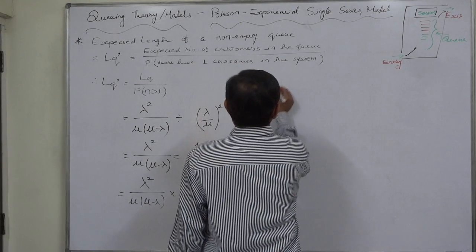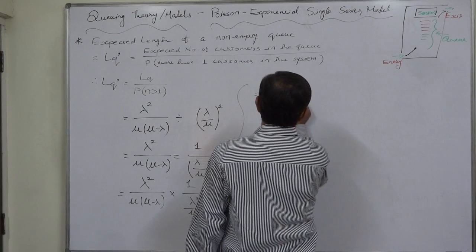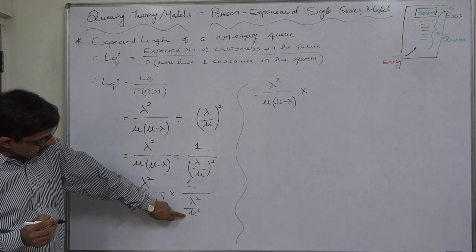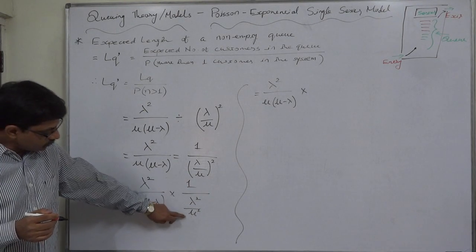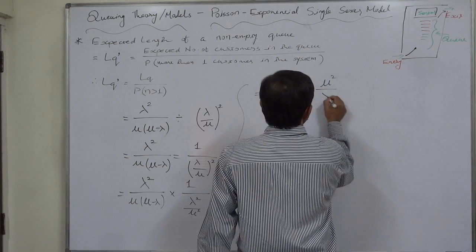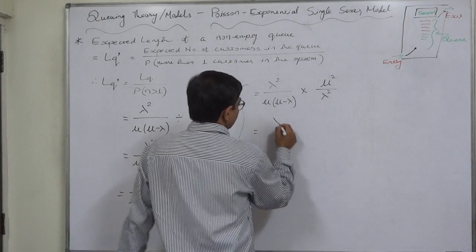That will be equivalent to lambda square upon mu into mu minus lambda. Now the denominator becomes the multiple of the numerator, so mu square will be the new numerator: mu square upon lambda square. One more simplification.